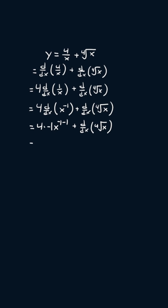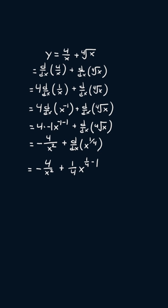This will simplify to negative four over x squared. Now I'm going to apply the radical rule, so we're going to get the derivative of x to the power one over four. So we get negative four over x squared plus one over four times x to the power one over four minus one, which simplifies to negative four over x squared plus one over four times x to the power negative three over four. And that is our answer.